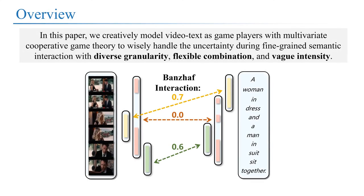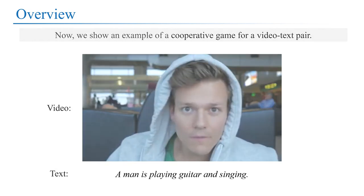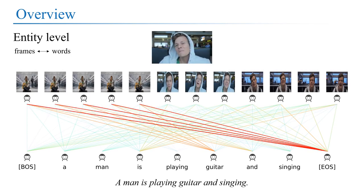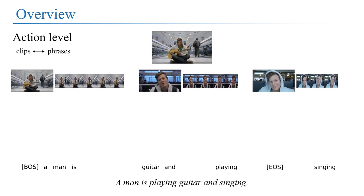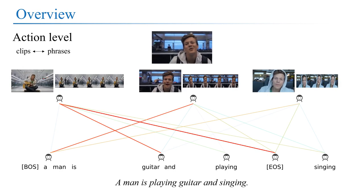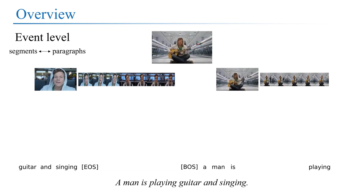In this paper, we creatively model video-text as game players with multivariate cooperative game theory to wisely handle uncertainty during fine-grained semantic interaction with diverse granularity, flexible combination, and vague intensity. We show an example of a cooperative game for a video-text pair. We achieve hierarchical interaction: entity-level interactions on frames and words, action-level interactions on clips and phrases, and event-level interactions on segments and paragraphs.